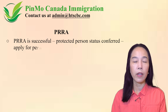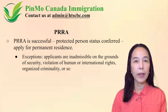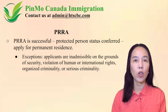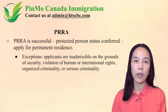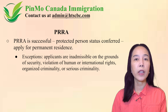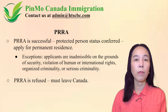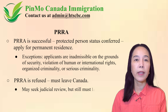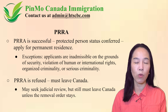If the applicant's PRA is successful, in most cases they become a protected person and may apply for permanent residence. However, if the applicants are inadmissible on the grounds of security, violation of human or international rights, organized criminality, or serious criminality, even if their PRA is positive, they cannot be conferred refugee protection, but they will be allowed to stay in Canada. If the applicant's PRA is unsuccessful, they must leave Canada, although they may seek judicial review if they think the refusal is wrong. They still have to leave unless the federal court orders a stay of their removal order.